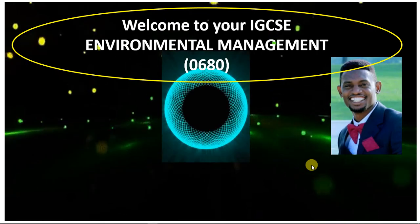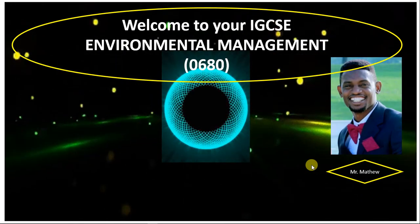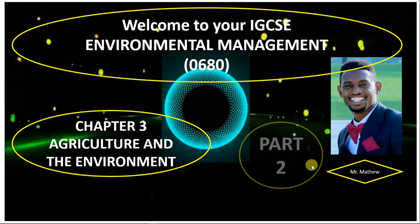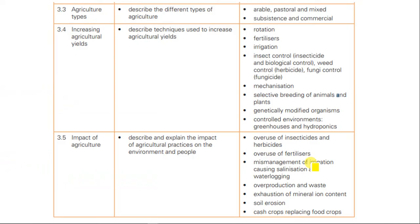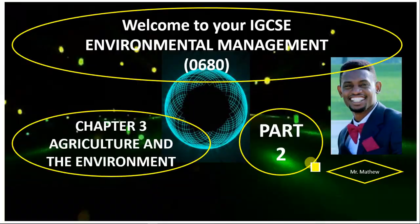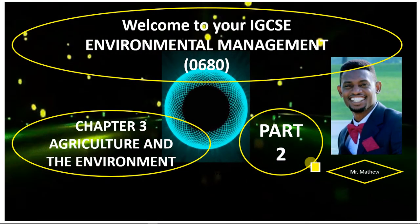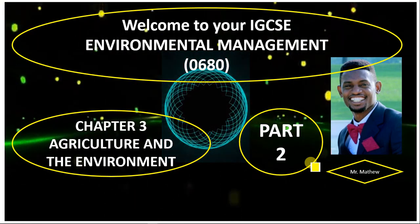In part two of this Agriculture and Environment series — which is a very large topic broken down into four parts — we'll be looking at agricultural types, increasing agricultural yield and the impact of agriculture. Subscribe so that once part two is uploaded, you'll be able to get it. Thank you.